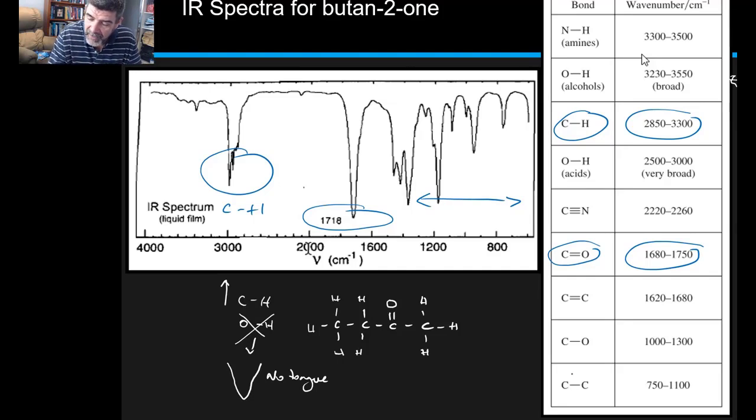For example, we've got carbon-carbon bonds. We know that there are definitely carbon-carbon bonds, and they occur between 750 and 1100. There's a few of those in there.